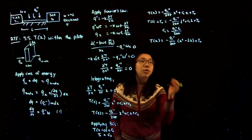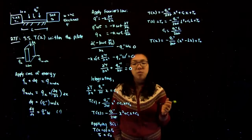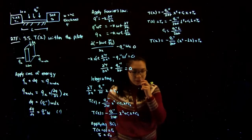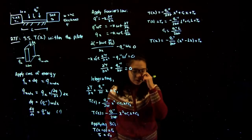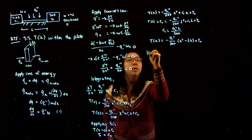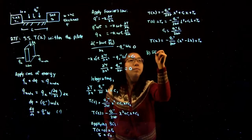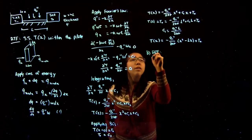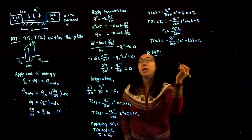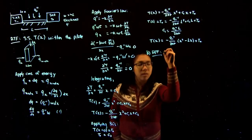So this is the entire temperature profile. The second part of the question asks us to find the rate of heat transfer from the bar to each of the sinks.